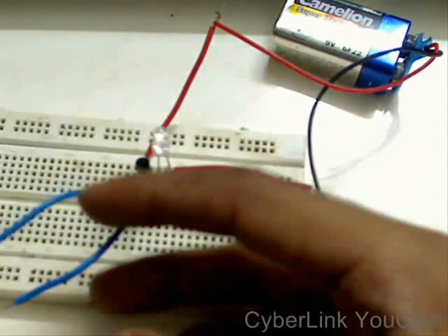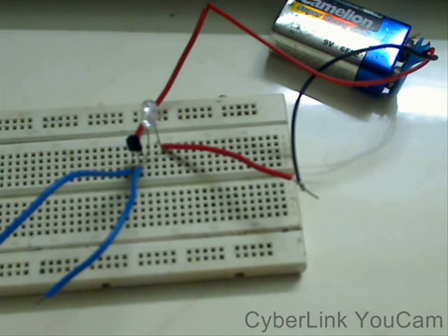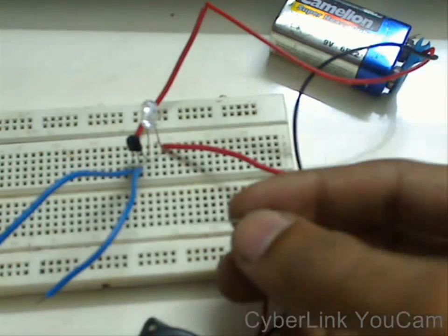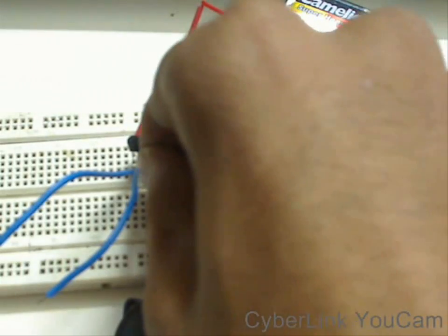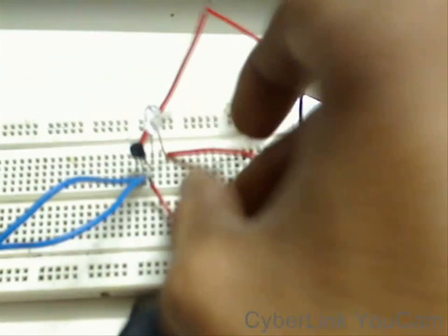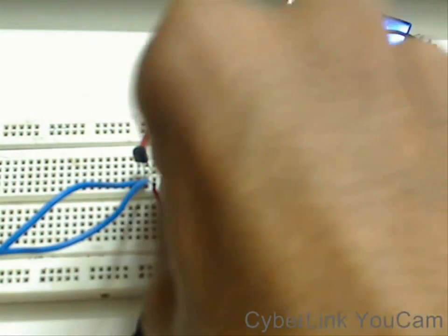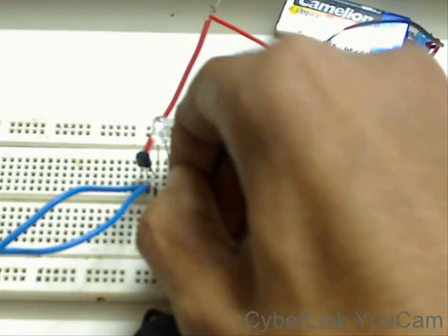What we can do to convert it completely into a water alarm is we can simply connect a buzzer. The positive side of the buzzer goes to the emitter and the negative to the negative terminal of the battery. The buzzer is connected in parallel to the LED.